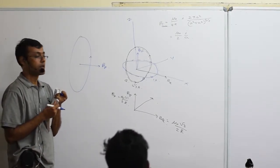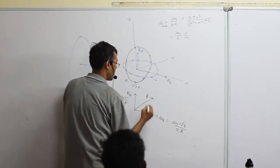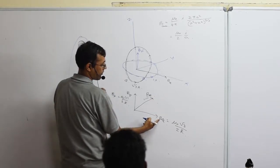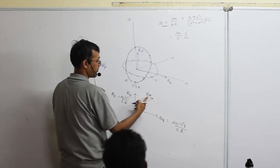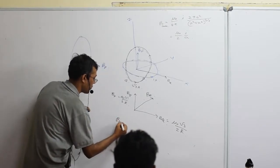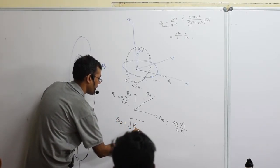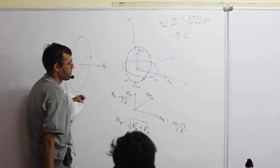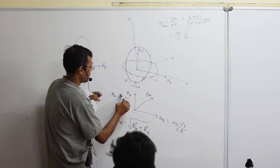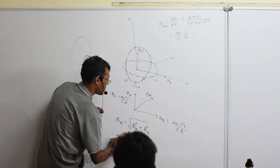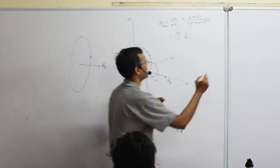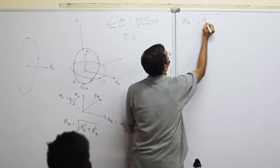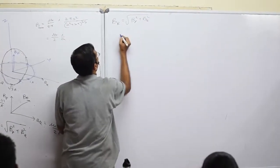Since the two fields are perpendicular to each other, use Pythagoras theorem. The resultant B_R = √(B_P² + B_Q²). Substituting: B_R = √[(μ₀/2R)² + (μ₀√3/2R)²]. Taking μ₀/2R as common, it comes out of the square root. What remains inside is 1² + (√3)².